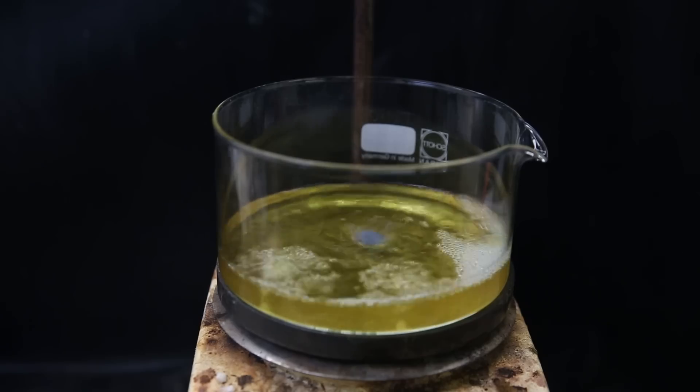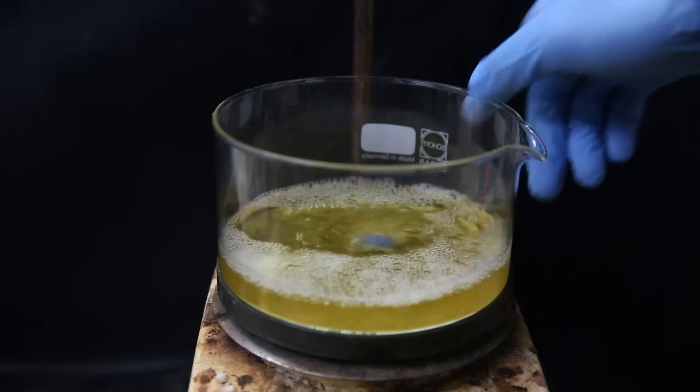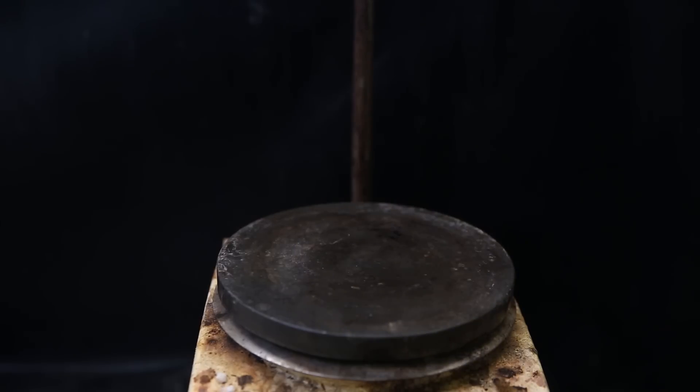A small bit of solid has precipitated out at this point, and I then cover it with a watch glass and set it in the freezer at minus 25C to crystallize out the product.